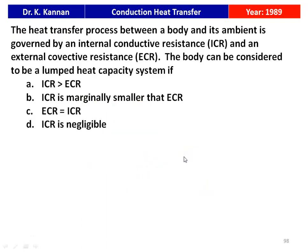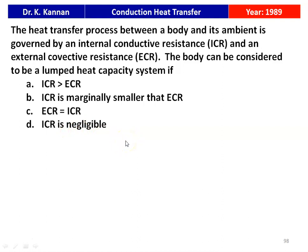Next question on unsteady state heat transfer: the heat transfer process between a body and its ambient is governed by internal conductive resistance (ICR) and external convective resistance (ECR). The body can be considered a lumped heat capacity system when ICR is negligible. The lumped parameter system is applicable only when the internal conduction resistance is negligible. The answer is: ICR is negligible.